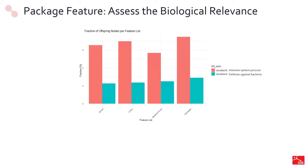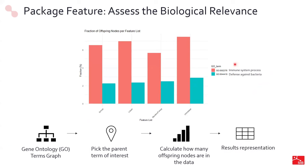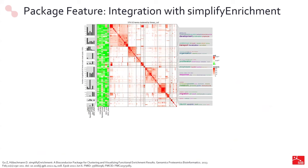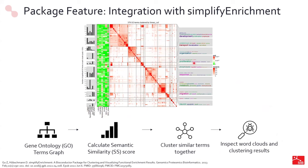The most important thing is to assess biological relevance. One method is to quantify how many parent terms of interest are spanning the offspring nodes in your list. For example, you take the gene ontology graph, pick the parent term of interest — such as immune system process or defense against bacteria — and calculate how many offspring nodes are present in your data, then compare which list has more of them. Finally, there is integration with simplify enrichment, a very nice package to perform semantic similarity analysis and cluster these terms. You do gene ontology enrichment, calculate semantic similarity scores between GO terms, cluster those terms, and inspect the word cloud output to see the clustering results.